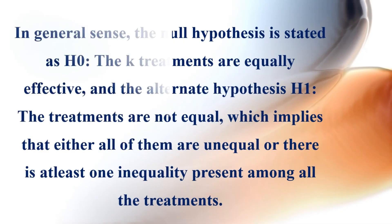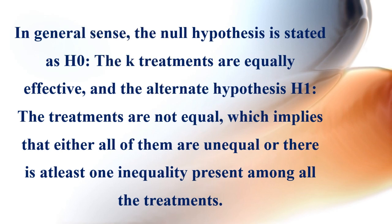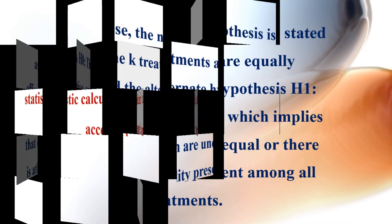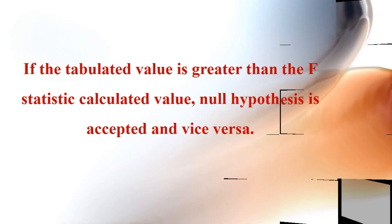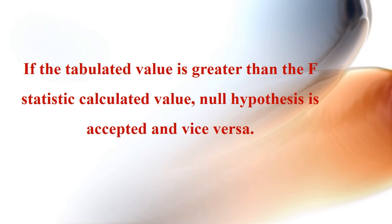In general, the null hypothesis H-zero states that the k treatments are equally effective. The alternate hypothesis H-1 states that the treatments are not equal, implying that either all treatments are unequal or there is at least one inequality present among all the treatments. If the tabulated value is greater than the calculated F-statistic, the null hypothesis is accepted, and vice versa.